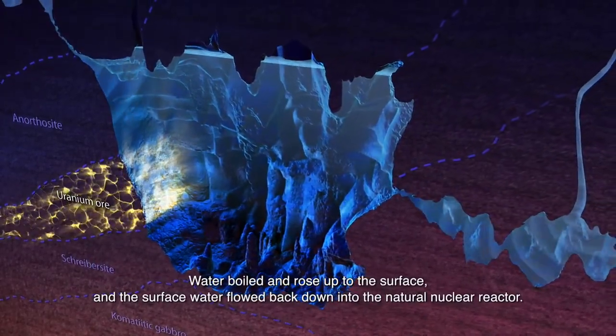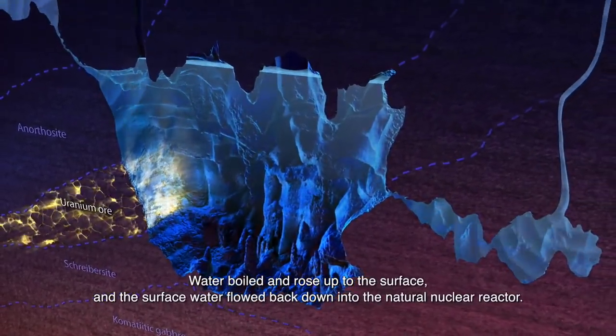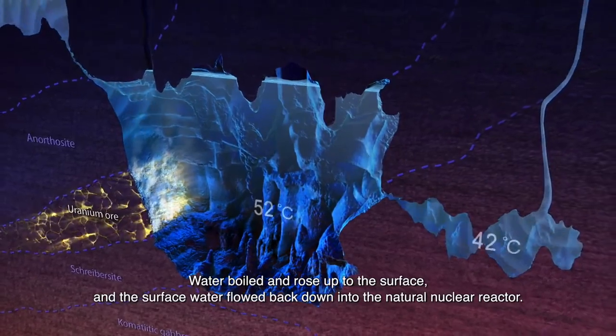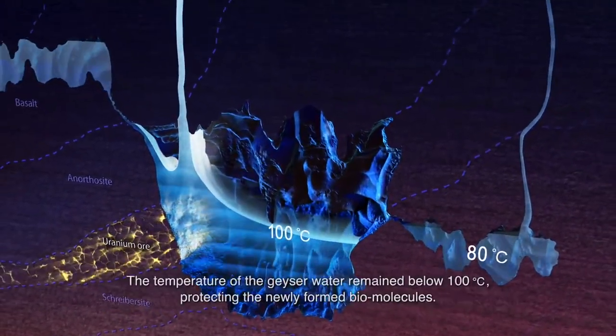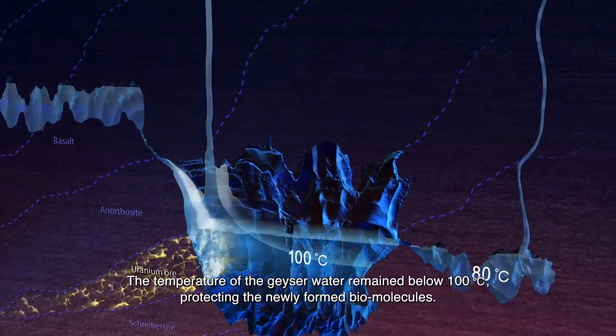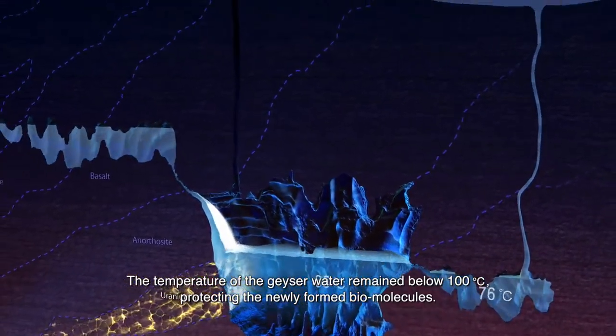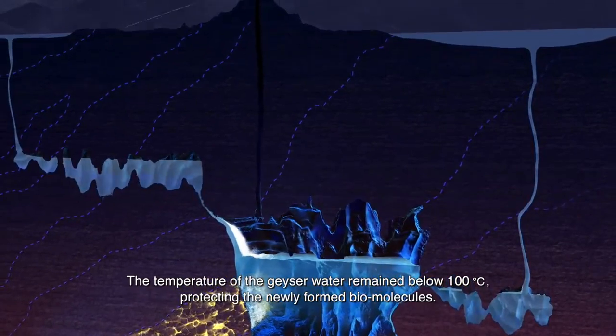Water boiled and rose up to the surface, and the surface water flowed back down into the natural nuclear reactor. The temperature of the geyser water remained below 100 degrees, protecting the newly formed biomolecules.